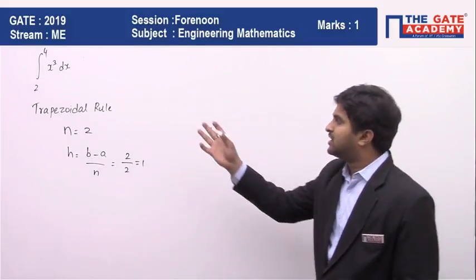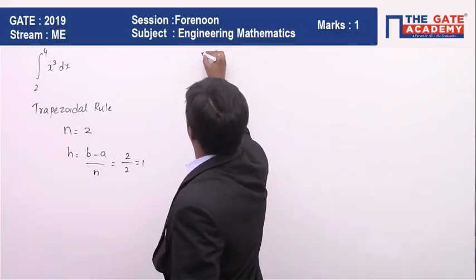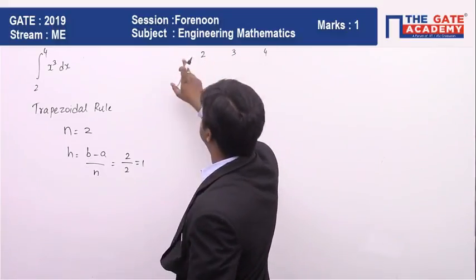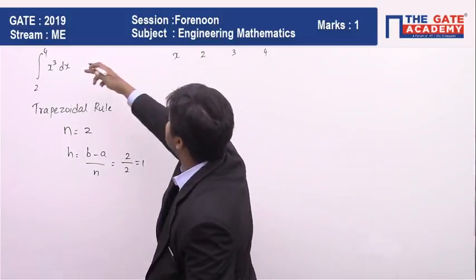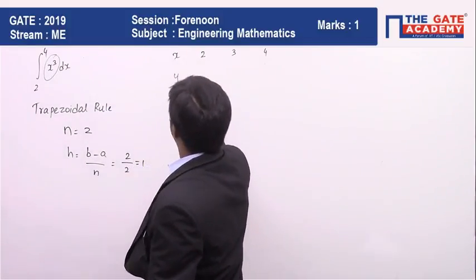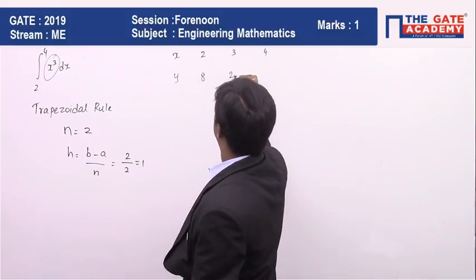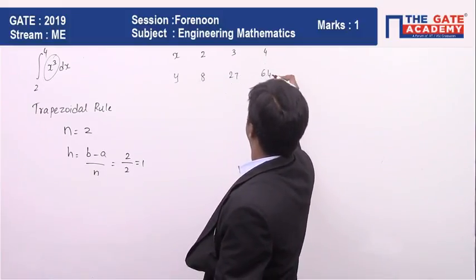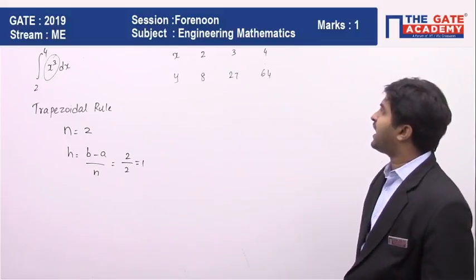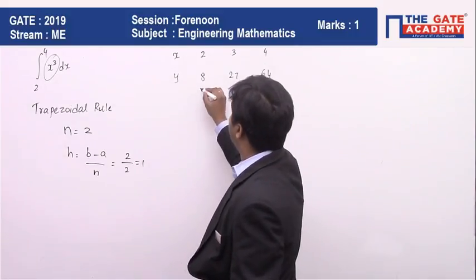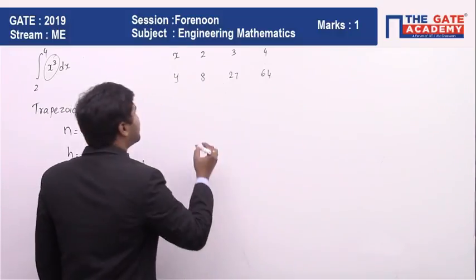Trapezoidal rule: step size is 1, these are the values of x. The values of y, which is the function itself, is going to be 8, 27, 64. So these are the values: y naught, y1, and y2.